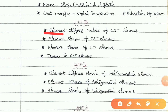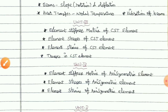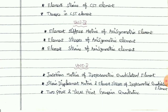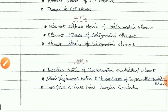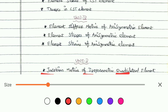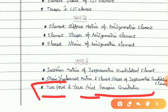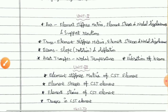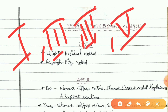Unit 3. The element stresses of isoparametric and correlator elements — the last topic is 2-point Gaussian quadrature. The 2-point and 3-point formulas are important. So the covered units are unit 1, unit 3, unit 4, and unit 5. These are the standard questions.